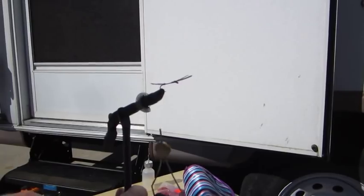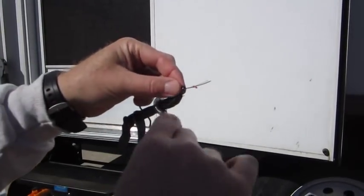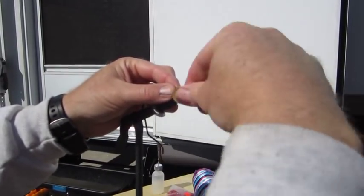Then we're going to come in with some small black chenille and a couple of soft wraps right at the back again. And then a black saddle hackle.